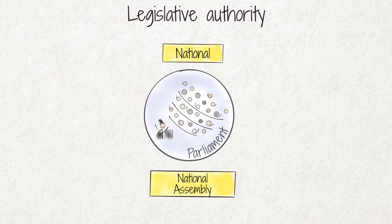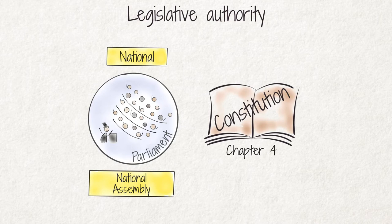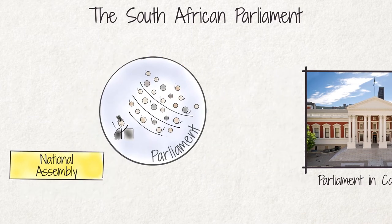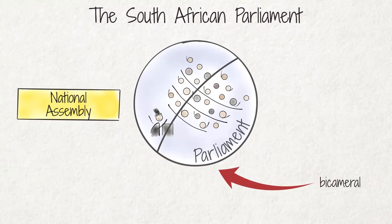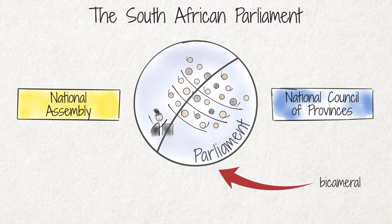In this video, we will focus on the national level and outline what parliament is and what it does, in line with chapter 4 of our constitution. The South African parliament is situated in Cape Town. It is the place where our elected representatives meet and carry out their work. Our parliament is bicameral, meaning we have two houses of parliament, known as the National Assembly and the National Council of Provinces.